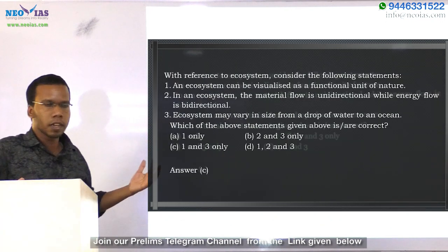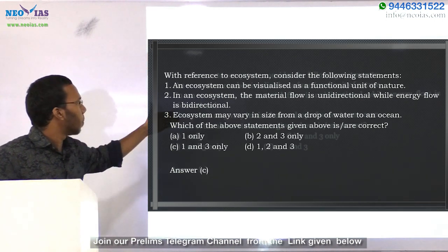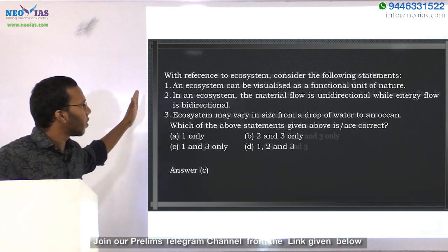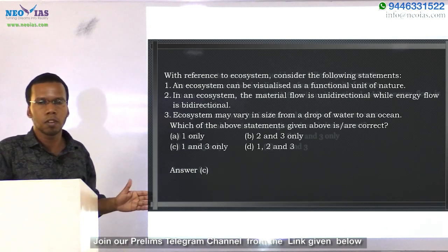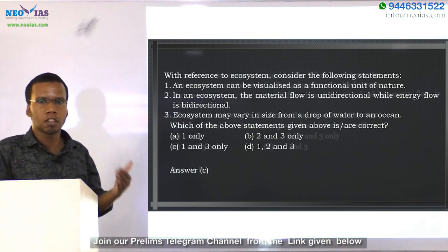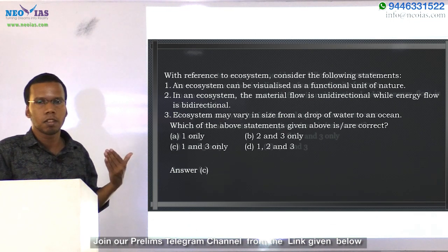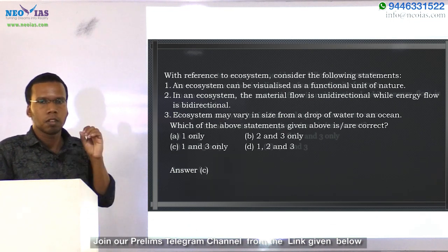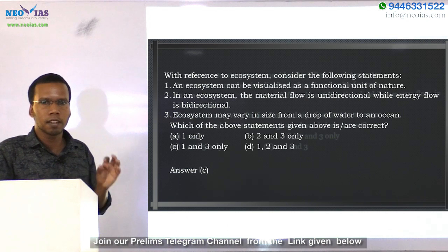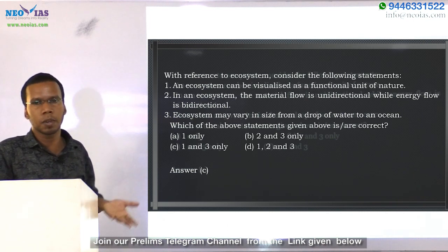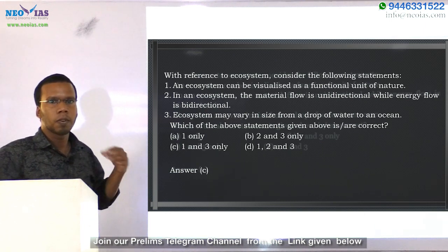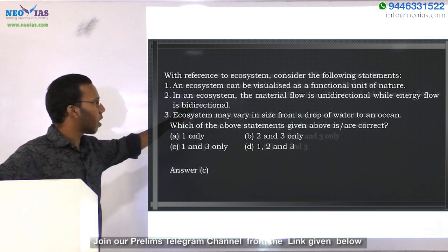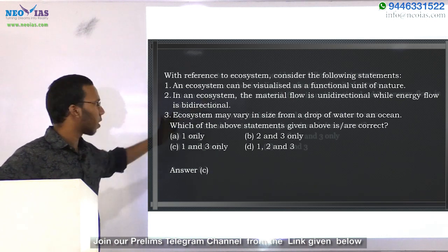Coming back to the question: the first statement — an ecosystem can be visualized as a functional unit of nature — is of course a correct statement. By definition, the ecosystem is the functional and structural system of communities of living organisms with their environment. So we can say that ecosystems act as a functional unit of nature. First statement is correct.